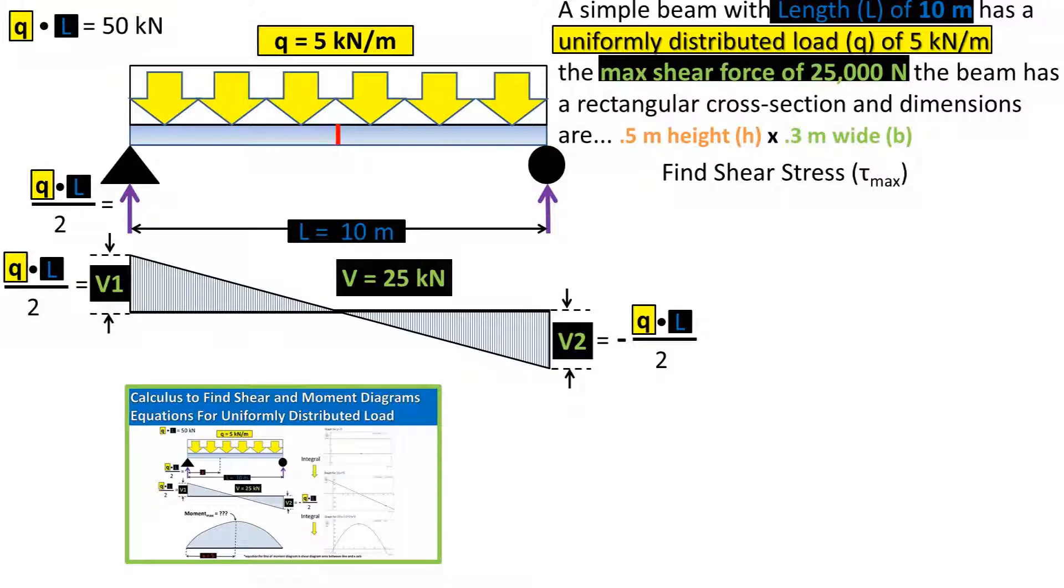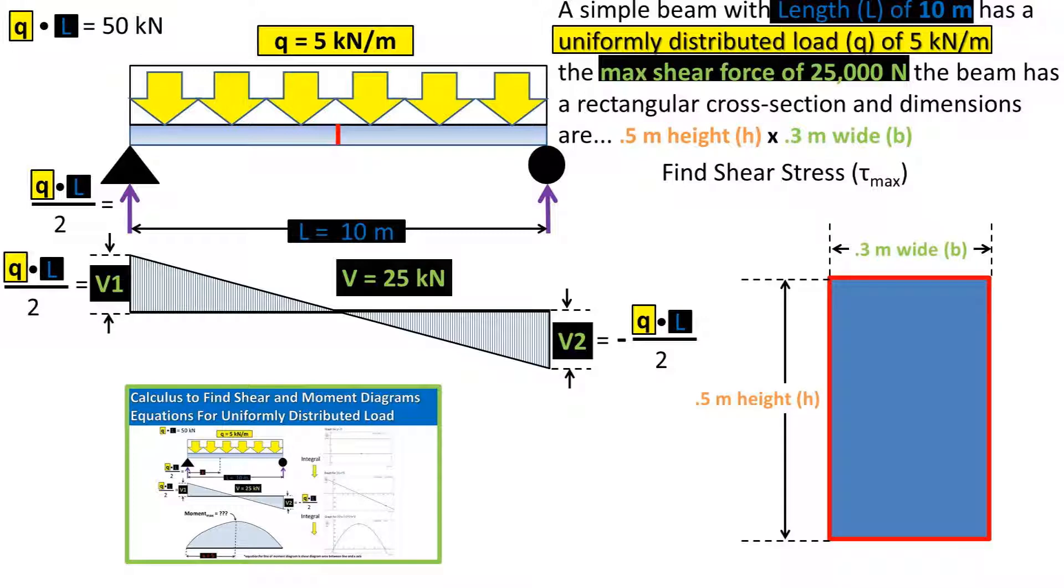In a previous video, we found that the max shear force for this case was 25 kilonewtons. The beam has a rectangular cross section, and the dimensions are 0.5 meters high by 0.3 meters wide. We want to find the max shear stress on this beam.